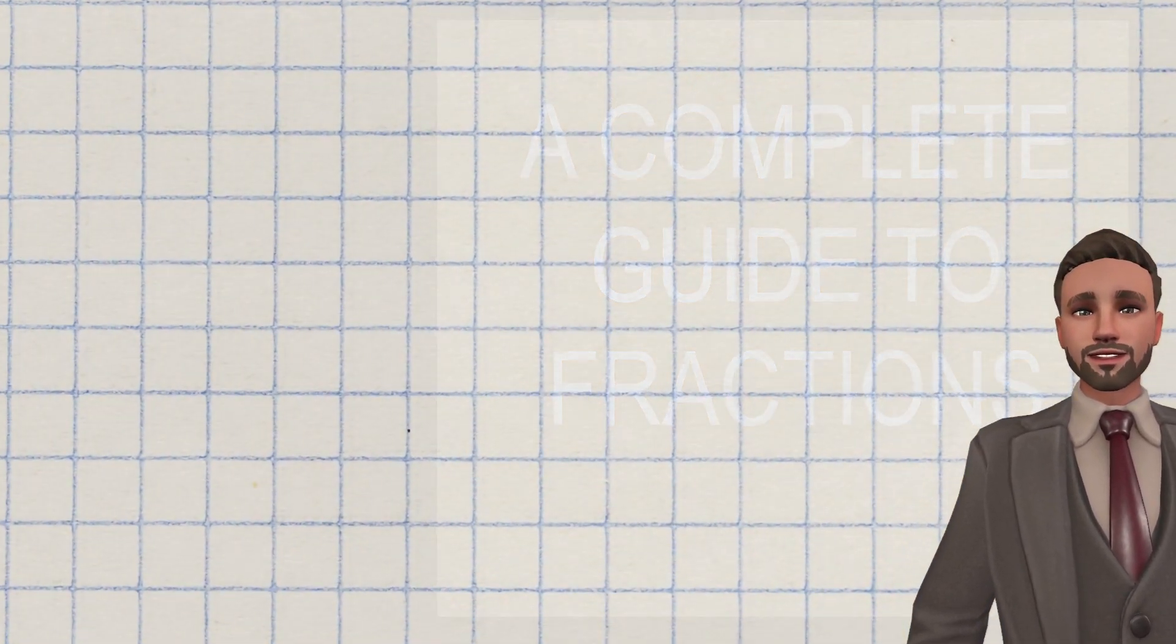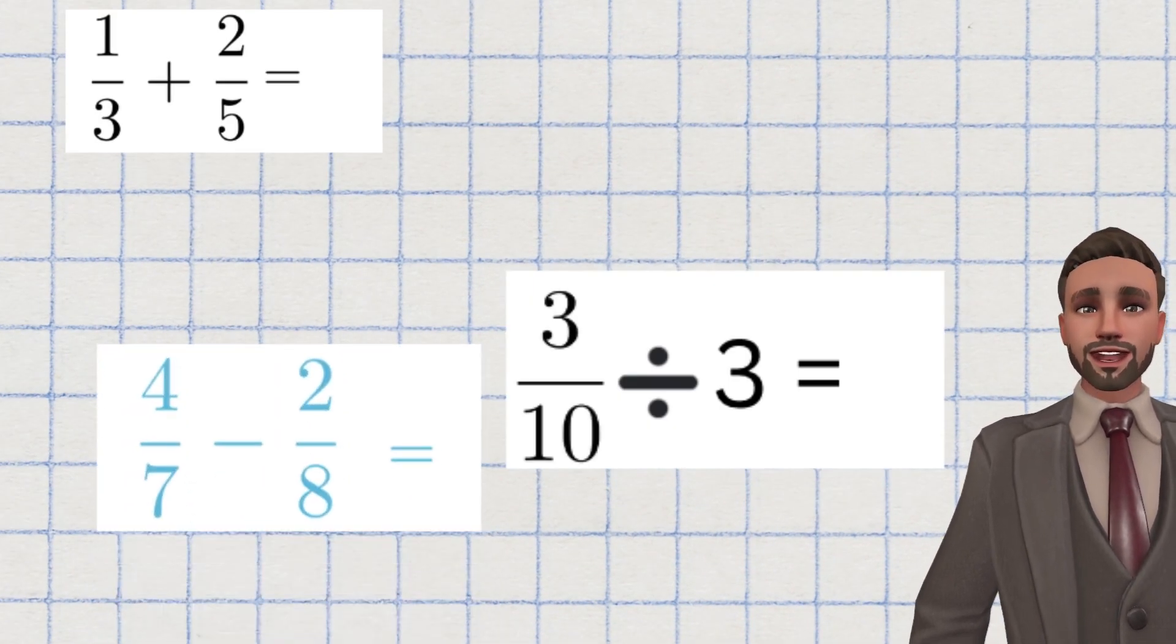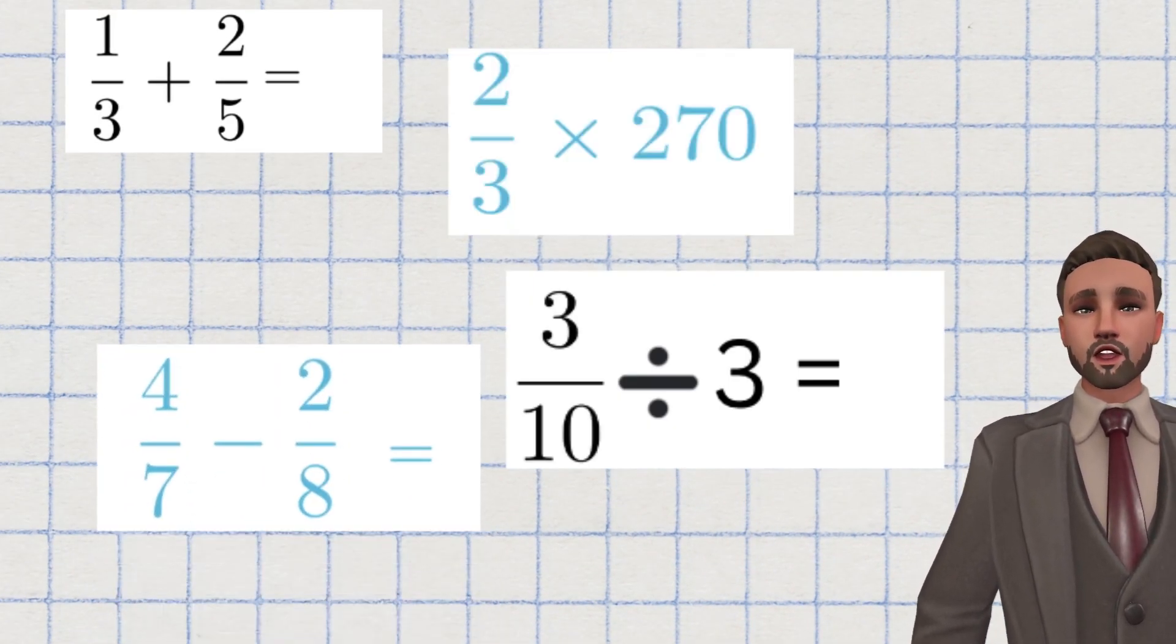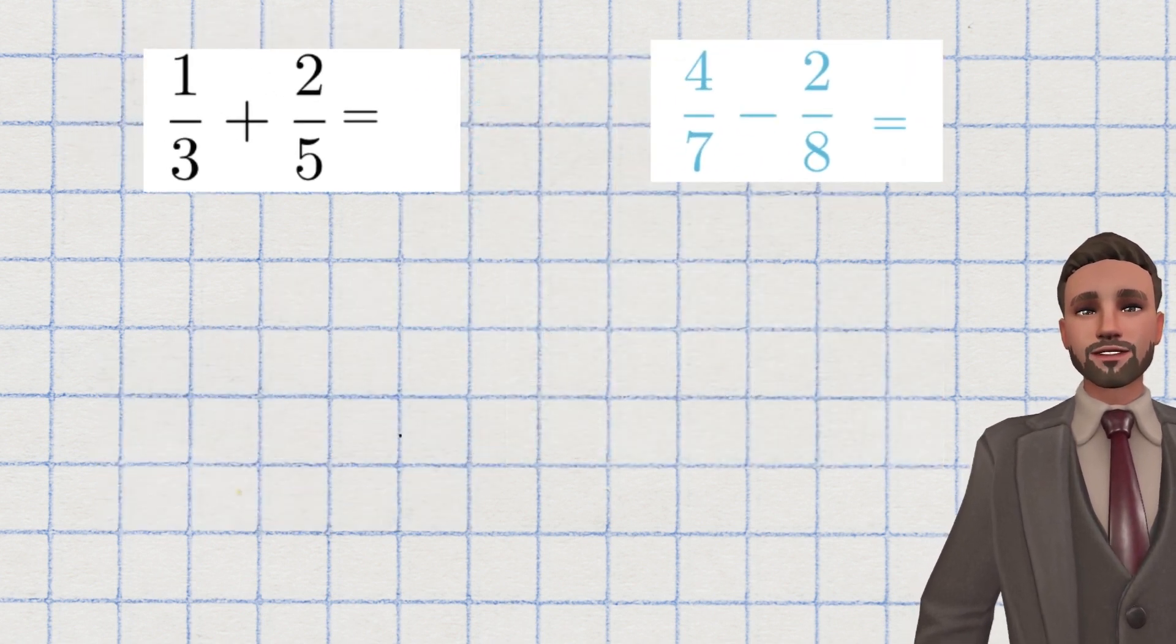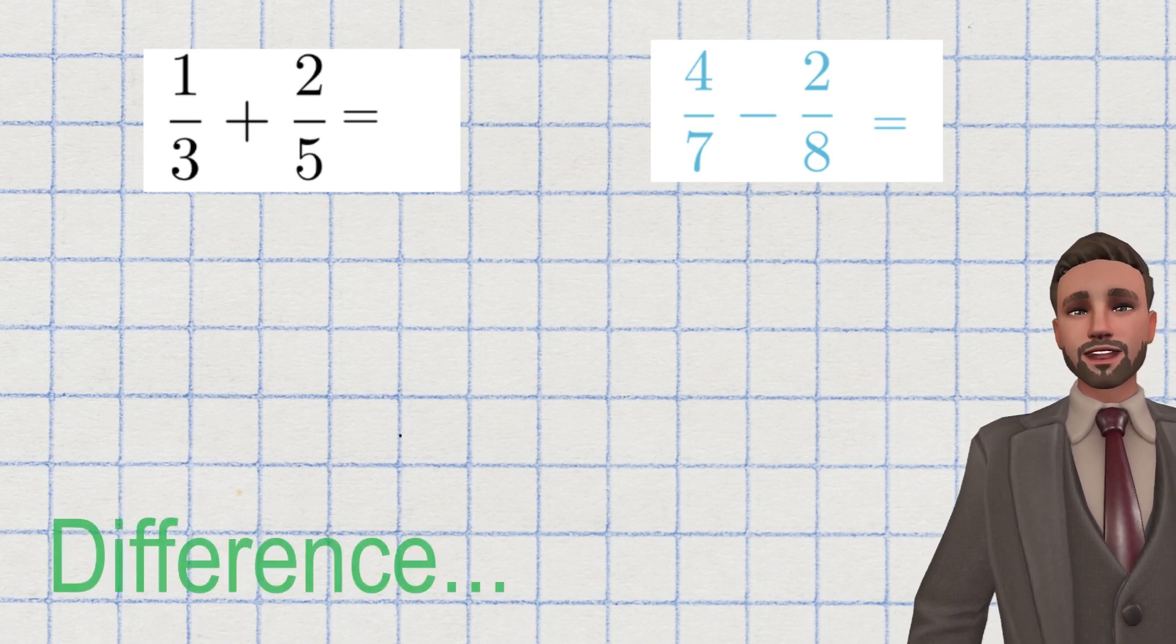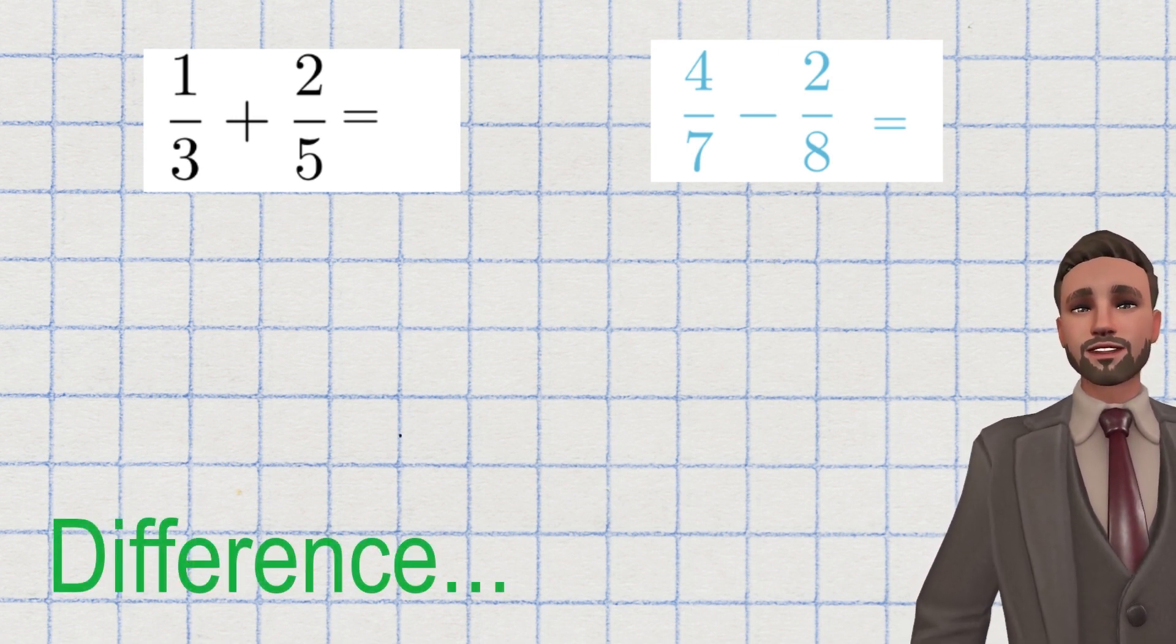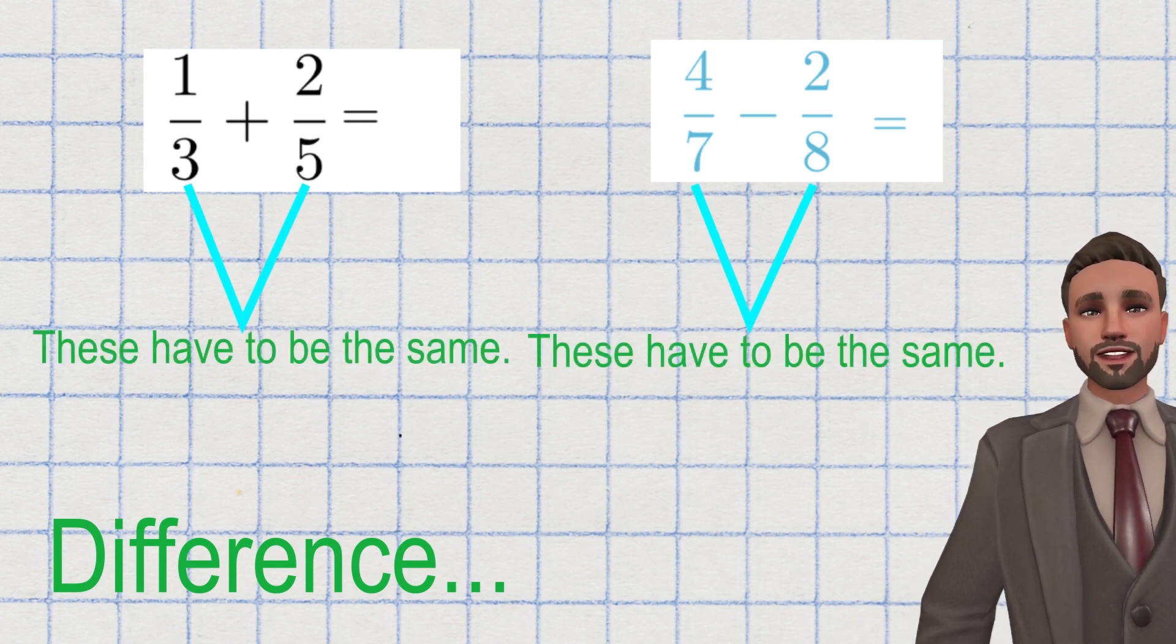Questions similar to this, this, this and even this. We're going to start off with addition and subtraction. We're going to be looking at them together as they follow the same steps and the same rules. The main difference of addition and subtraction from multiplication and division is that they need to have the same denominators in order to add or subtract.